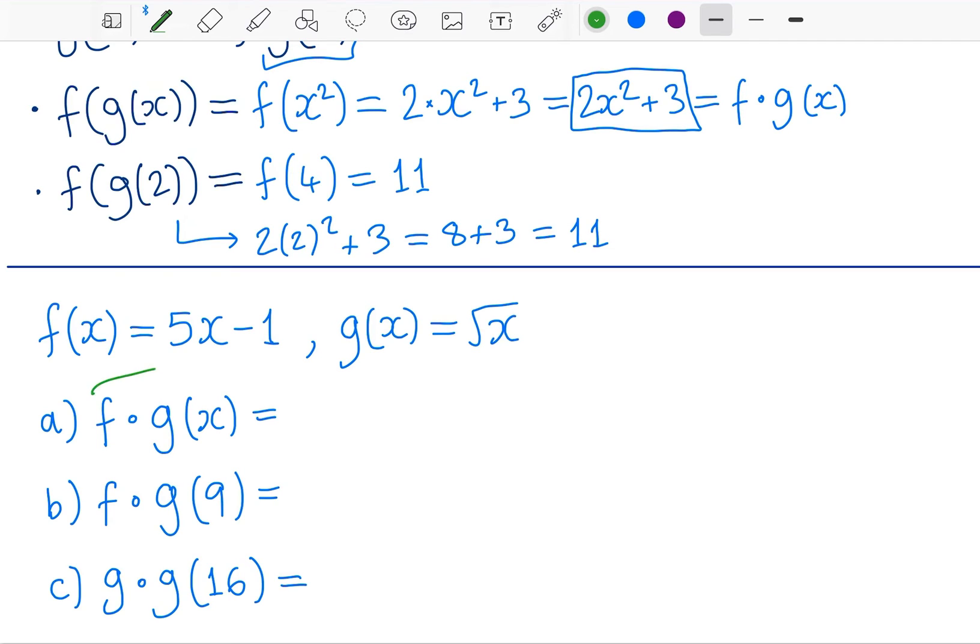So a little bit of extra practice here. So this notation again means f of g of x. I wouldn't write this in an exam, but just to be clear, that's what it means. Input g into f. So I will take this function and plug it in to f, five times square root of x minus one. And that's it. That's my function. That's my composite function.